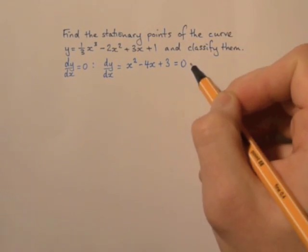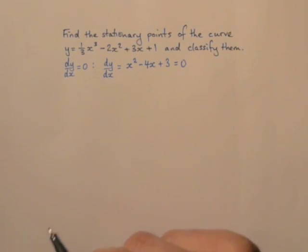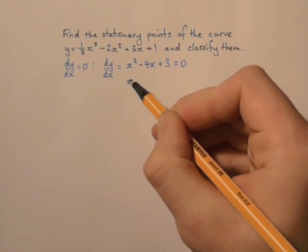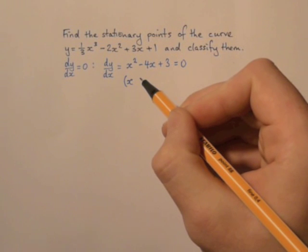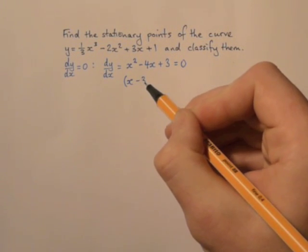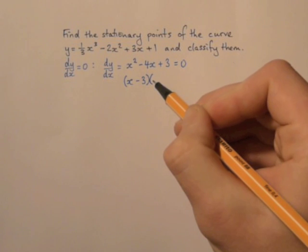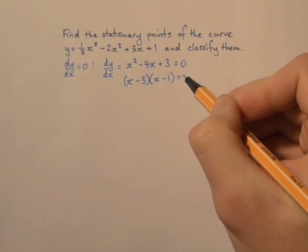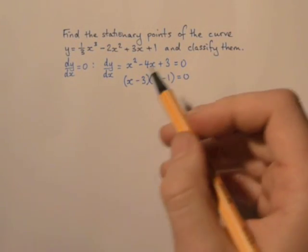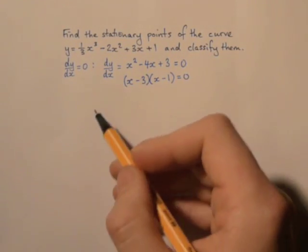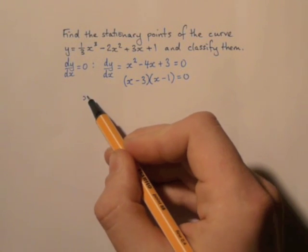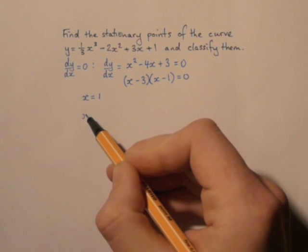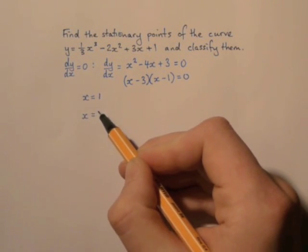So we're looking for, first of all, the solutions to this equation. We're going to get them by factorising. This factorises into x minus three times x minus one. So the two values of x are when x equals one and when x equals three.